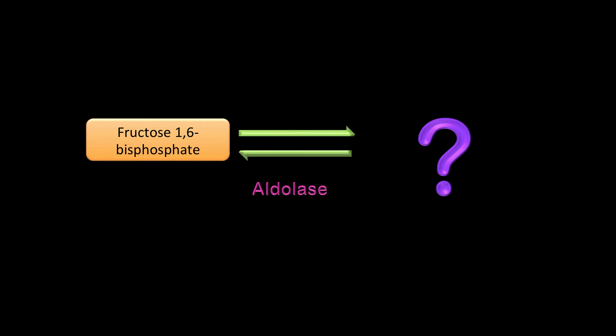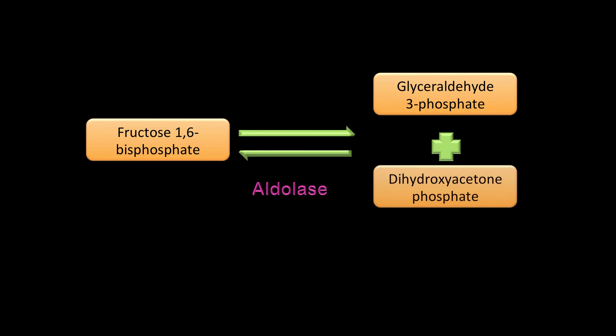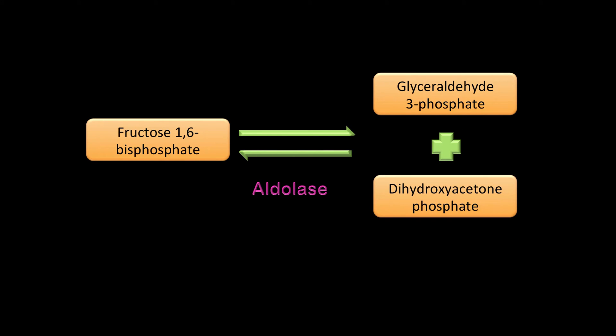Fructose-1,6-bisphosphate: this is the aldolase reaction. In the aldolase reaction we actually have lysis taking place — you're converting six carbons into two three-carbon molecules, named glyceraldehyde-3-phosphate and dihydroxyacetone phosphate.